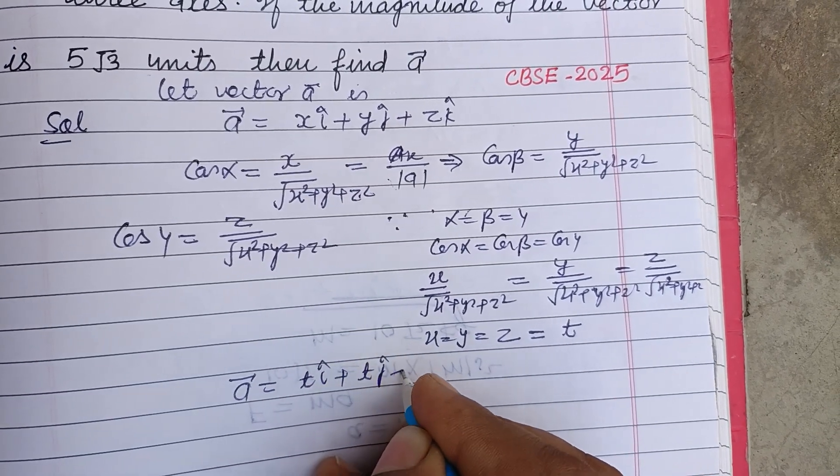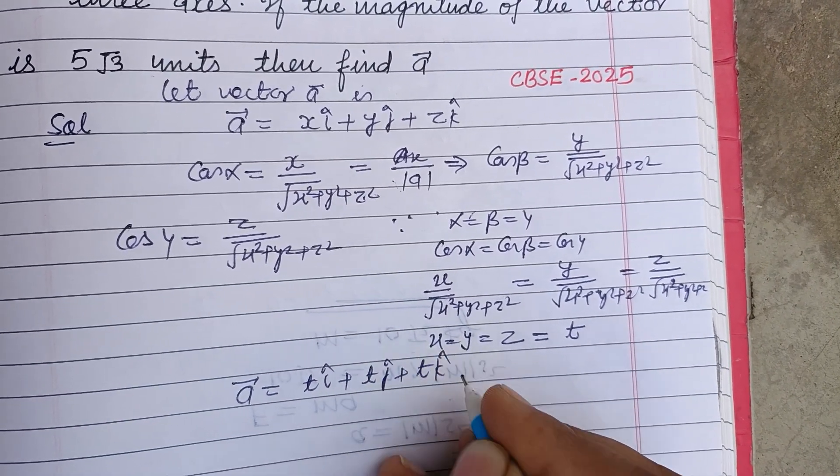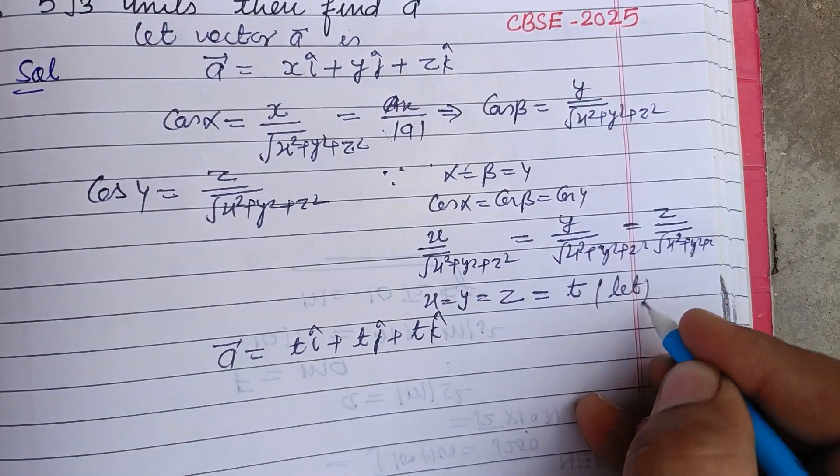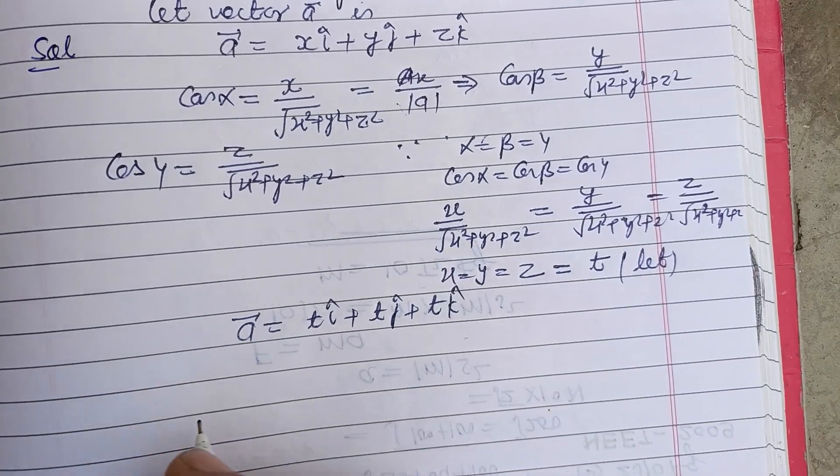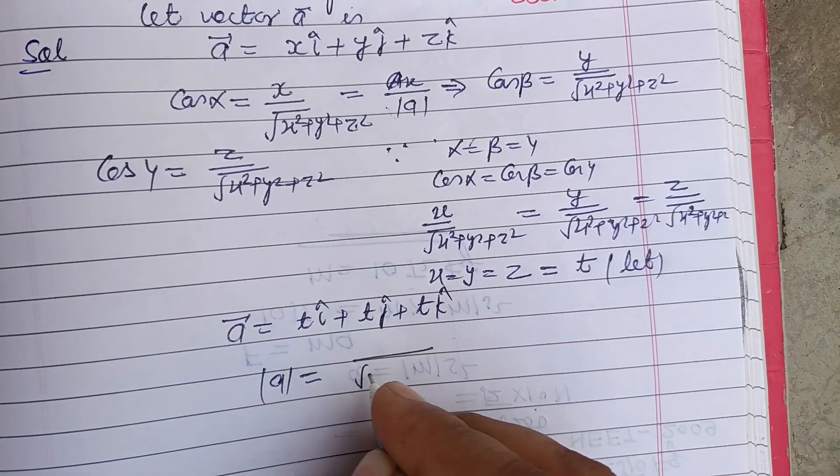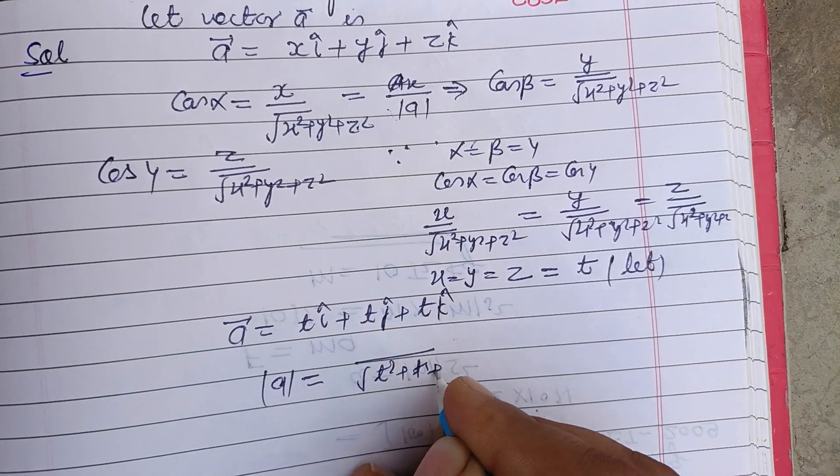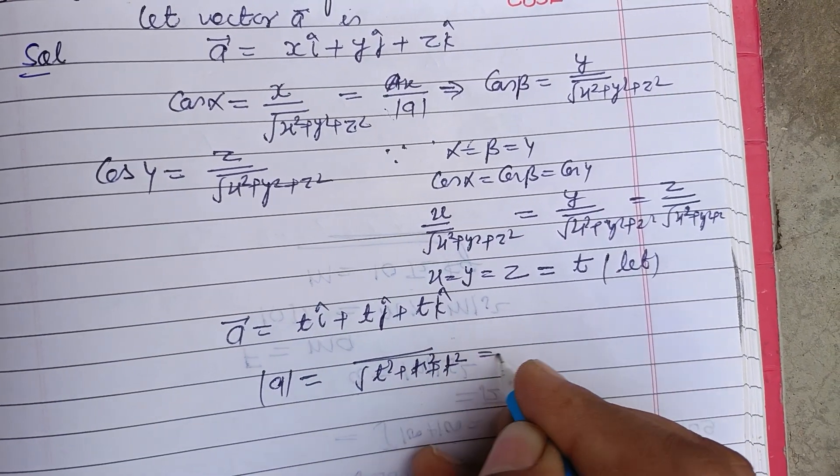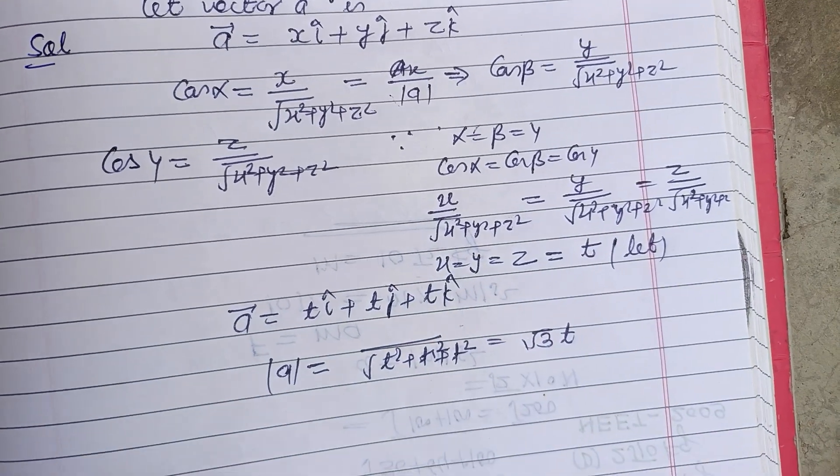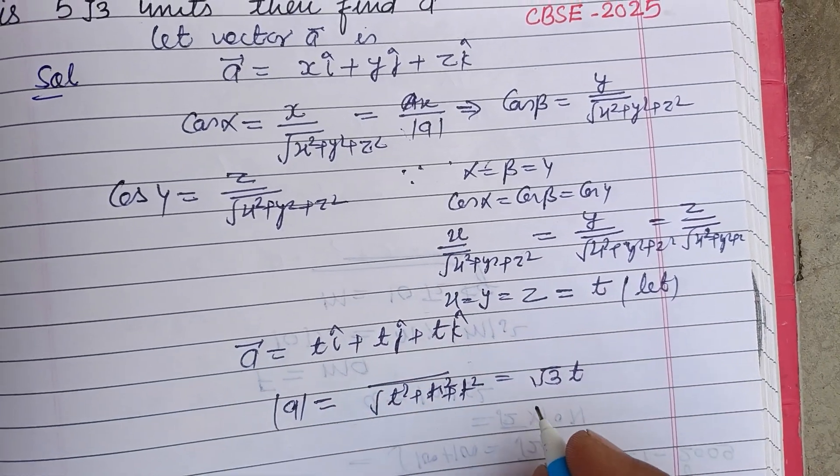So the vector becomes t i cap plus t j cap plus t k cap, because x, y, z are equal. Now its magnitude is root of (t squared plus t squared plus t squared), which is root 3 t, and it is given in the question as 5 root 3.